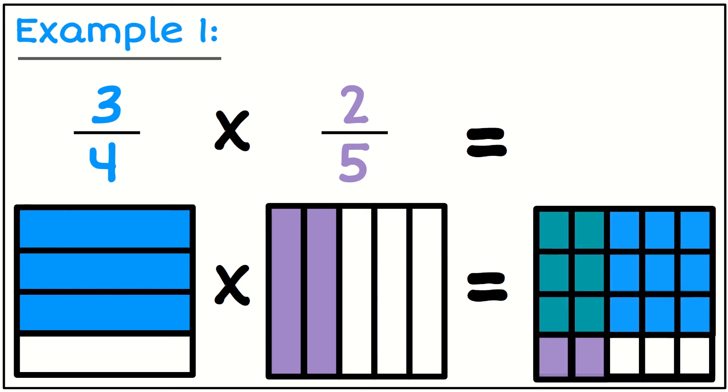That now makes a grid of 20. What I need to do is look at which of those have been colored in both blue and purple, and that is that section there.